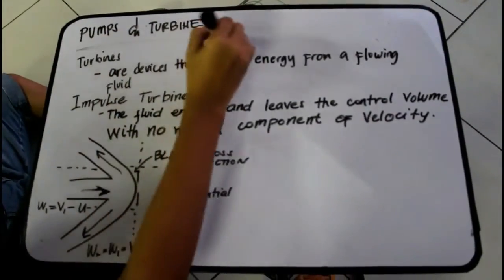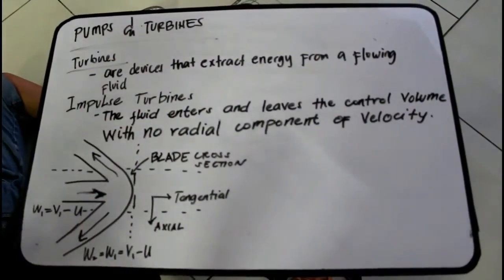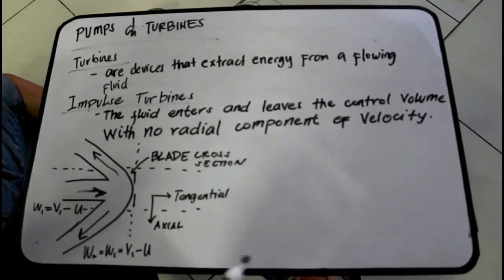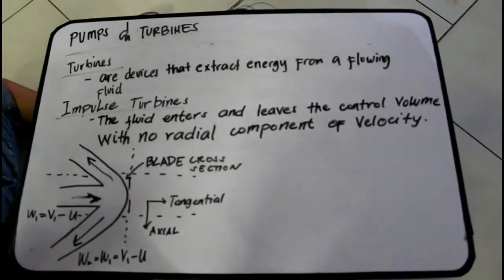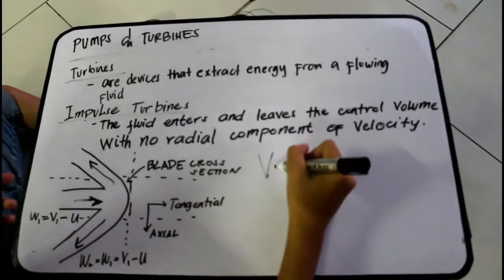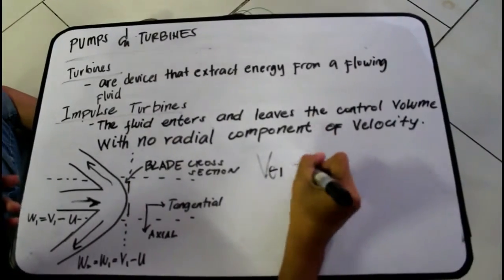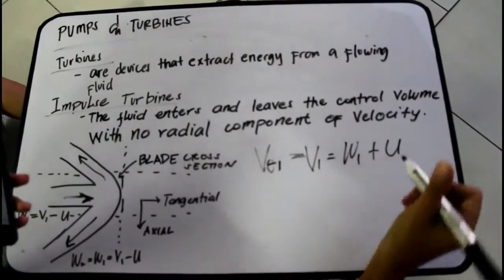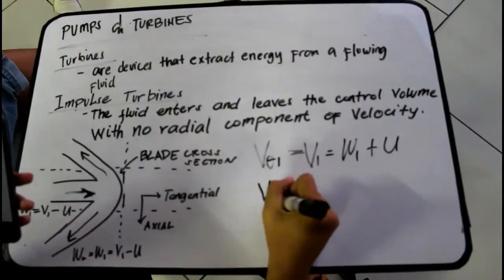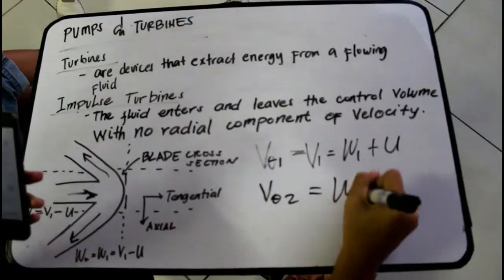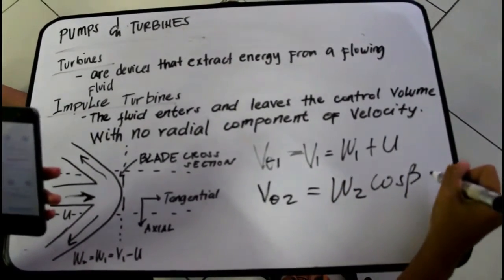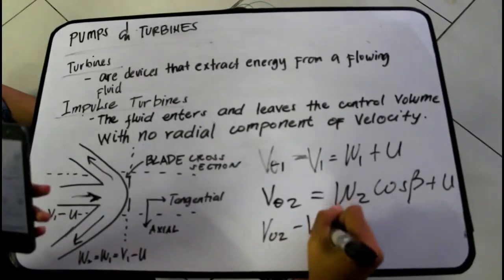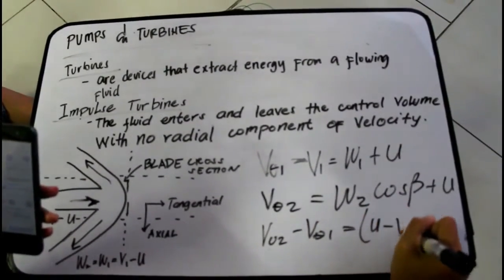Now let us discuss turbines. Turbines are devices that extract energy from a flowing fluid. For impulse turbines, the flow enters and leaves the control volume with no radial velocity component. The formulas are: V-theta-1 equals V1 equals W1 plus u; V-theta-2 equals w2 times cos beta plus u; and V-theta-1 minus V-theta-2 equals U minus V1 times the quantity 1 minus cos beta.